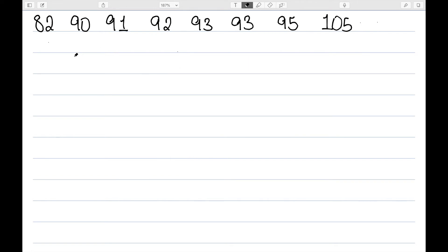Let's do another one. This time I have the values 82, 90, 91, 92, 93, 93, 95, and 105. If I try to find the median, I can see that it's halfway between 92 and 93. So Q2 will be 92.5.